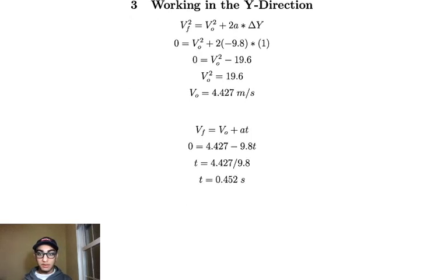And if I scroll down here, you can see my second calculation. Now I'm solving for time. And this is going to be useful for when I'm looking for my initial velocity in the x direction. So again, I plug in zero for the final velocity. And I use the initial velocity that I just got above and negative 9.8 for acceleration. And I get that the time is going to be 0.452 seconds.